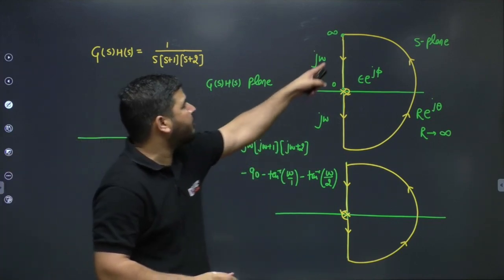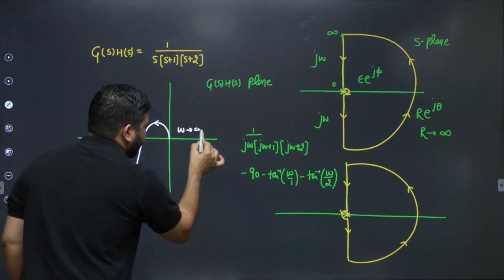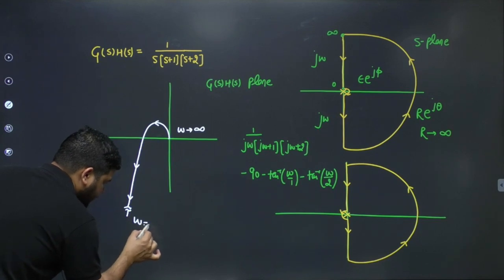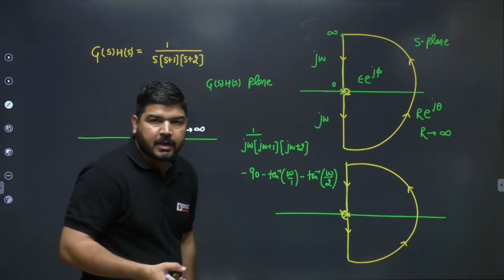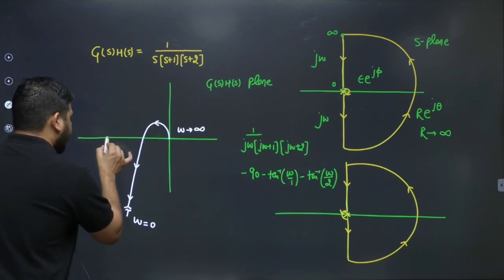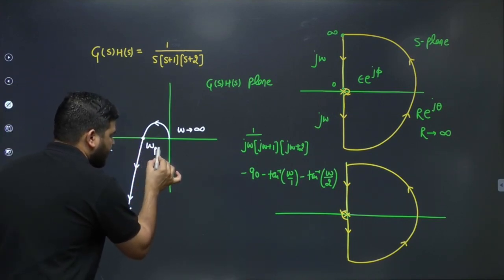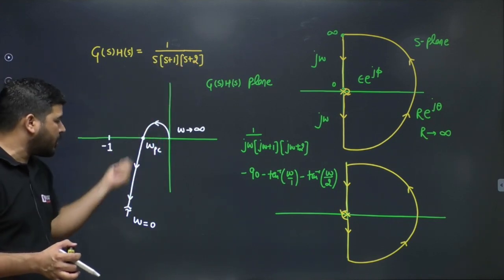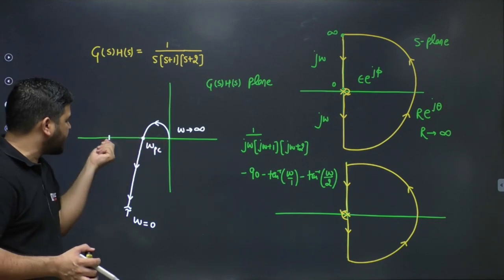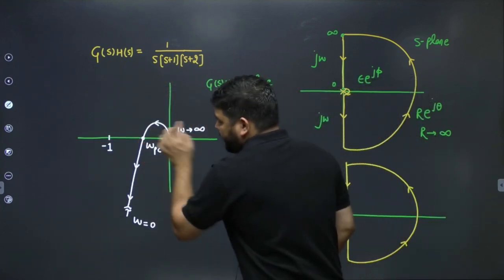Since ω moves from ∞ to 0, the arrow is in the direction from ω=∞ (magnitude zero) to ω=0 (magnitude infinite). At the phase crossover frequency ω_pc, the magnitude is less than one, so the minus one point lies outside the polar plot curve on the negative real axis.